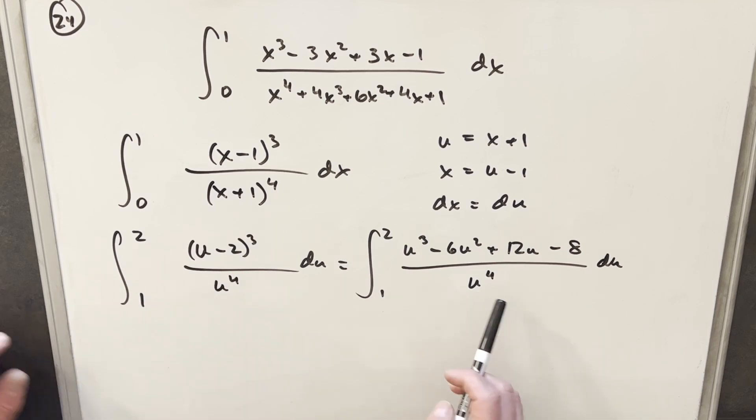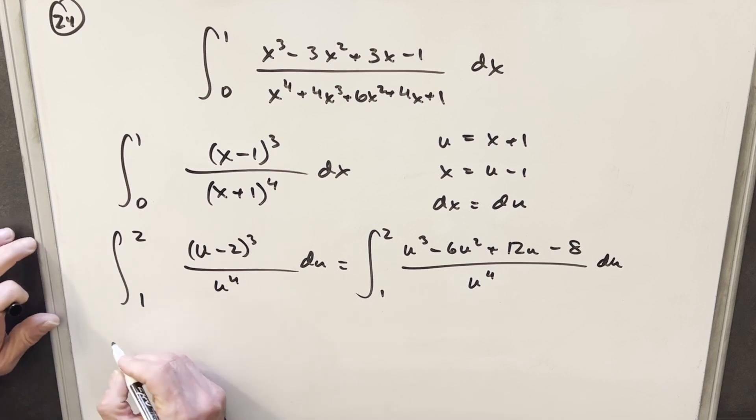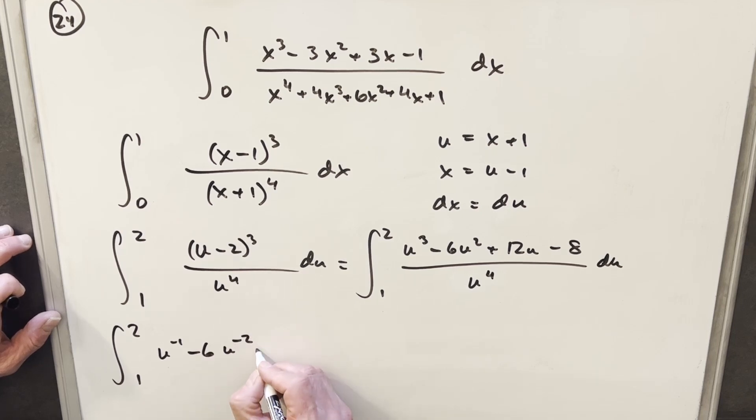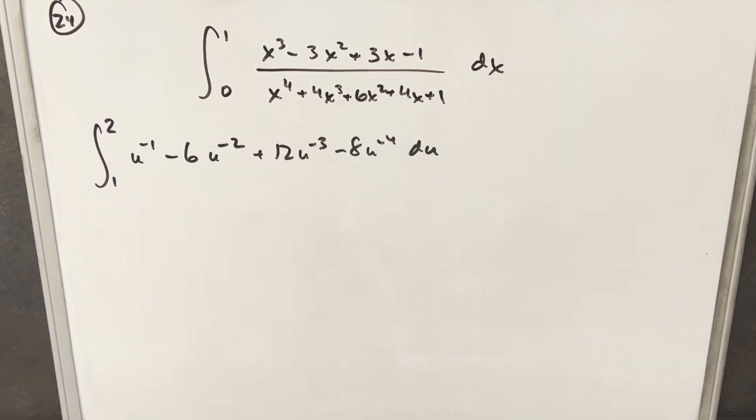Then from here, what I'm going to do is I'm going to divide my u to the 4th in here to get this into something to set up the power rule. So what we're going to have is our integral, the first term is going to be u to the minus 1, minus 6 u to the minus 2, plus 12 u to the minus 3, minus 8 u to the minus 4, du.